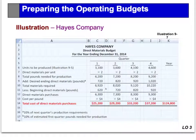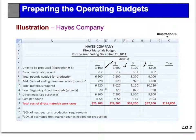Going back and looking at the production budget, we need to produce a certain number of units in quarters one, two, three, and four — those are the units of finished goods. Now we're doing the direct material budget. Recall that there are two pounds required for every unit of finished goods. Therefore, the total pounds required is 6,200 (3,100 times two), and 7,200 (3,600 times two).